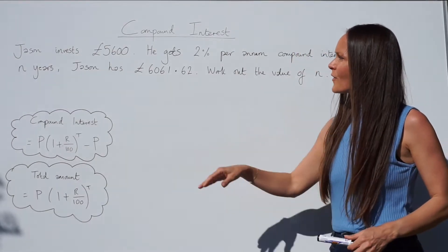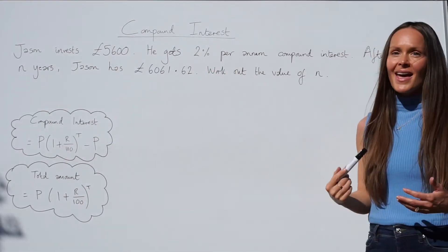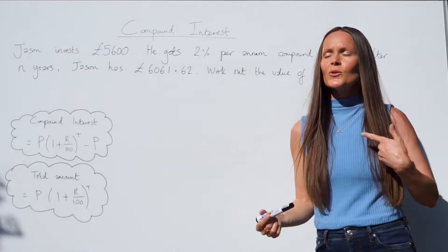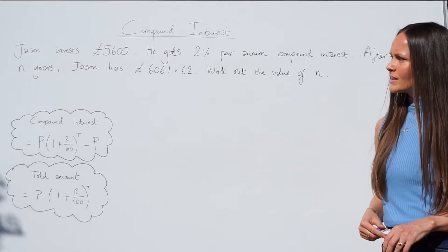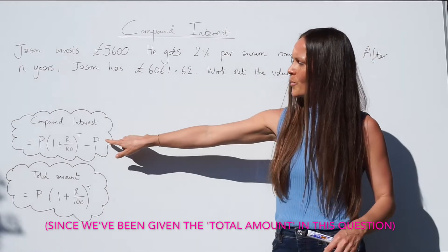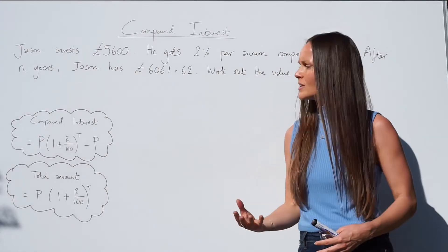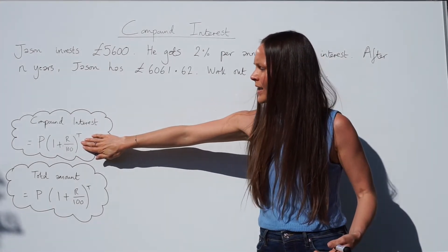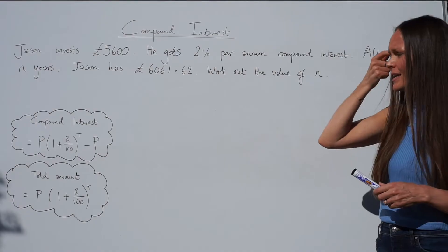In the next question, Jason invests £5,600. He gets two percent per annum compound interest, and after n years Jason has £6,061.62. We need to work out the value of n — how many years Jason invested his money. I want to use the version of the formula that gives the total amount of money, so without subtracting the principal amount at the end.